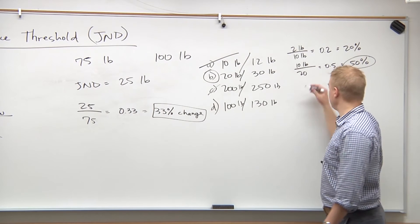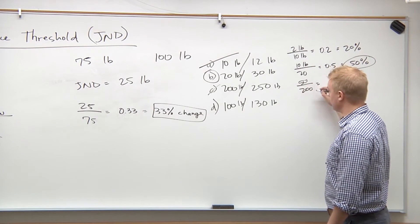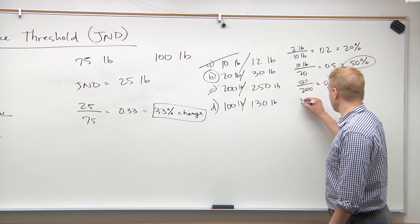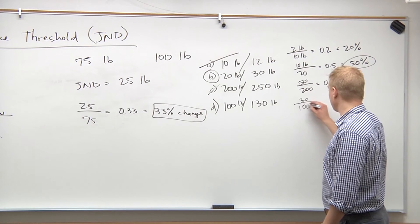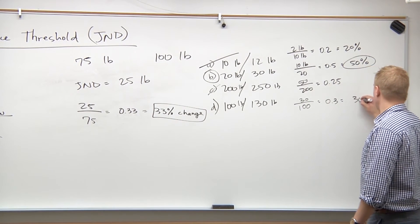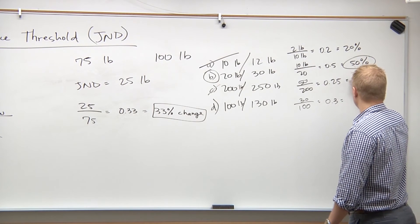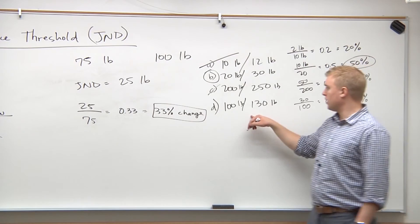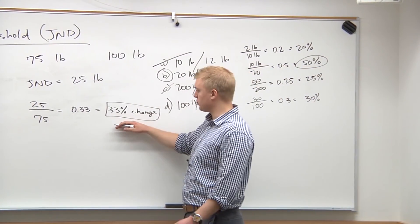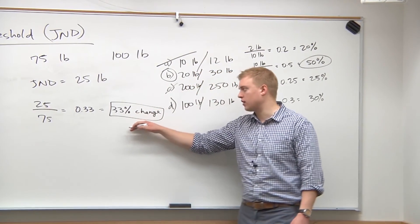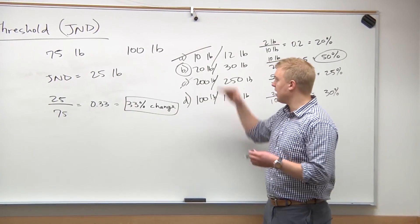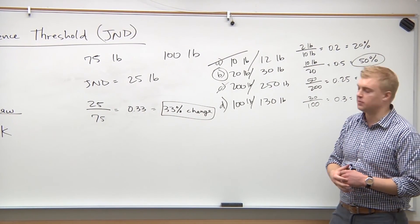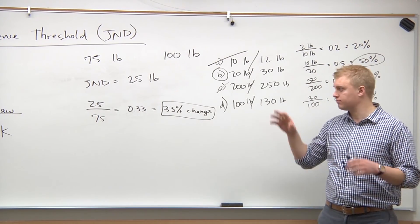For C, it's 50 pounds over 200, which is 0.25 — so mark that one out. For D, the JND is 30 pounds over an original of 100, giving 0.3 — a 30 percent change. So again, it's not that he wouldn't notice these differences at all, but his difference threshold is a constant 33 percent change. At any weight of haystack, he needs at least a 33 percent change to notice the difference between the two stimuli. The answer is B.